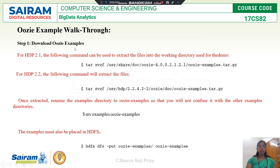Now we can see an example of how to download Oozie examples and how to use them. Oozie examples are already available in your Hadoop framework. If your Hadoop is version one, this is the command to extract the Oozie examples. Once downloaded, you can rename the directory to 'oozie-example' and put it into your Hadoop Distributed File System using the put command.